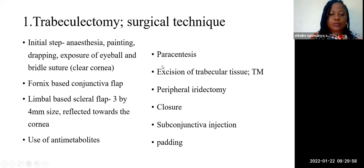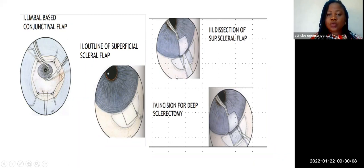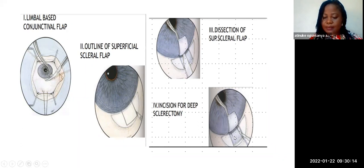This is what was described earlier: the limbal-based conjunctival flap, outline of the superficial scleral flap, then the dissection. This is the dissection for the deep scleral flap and the excision of the deep scleral flap. You can see a knife is used for the excision, and scissors are used for the iridectomy.